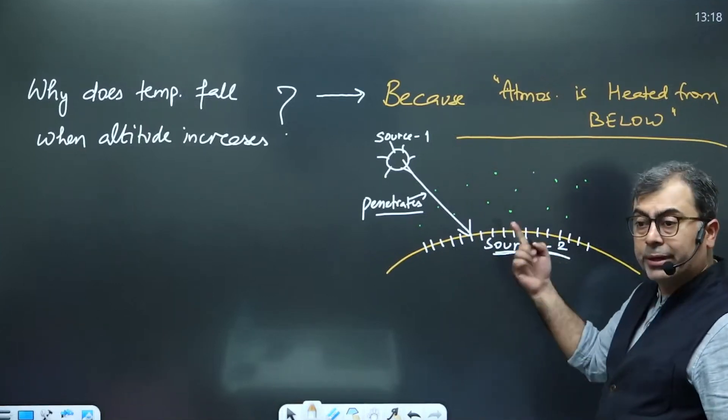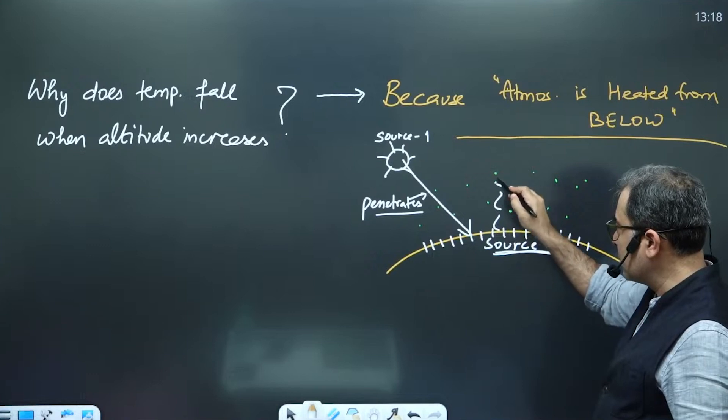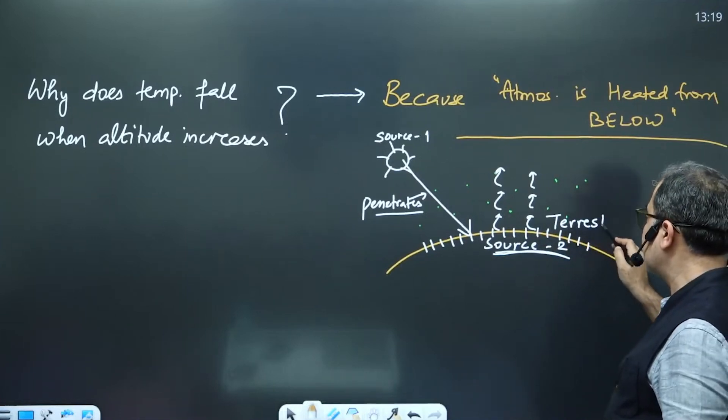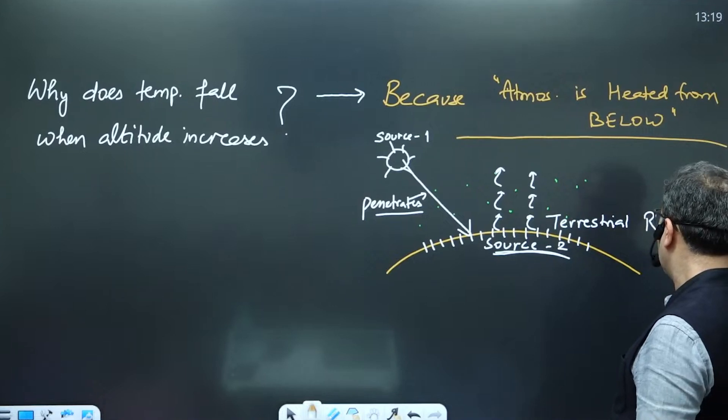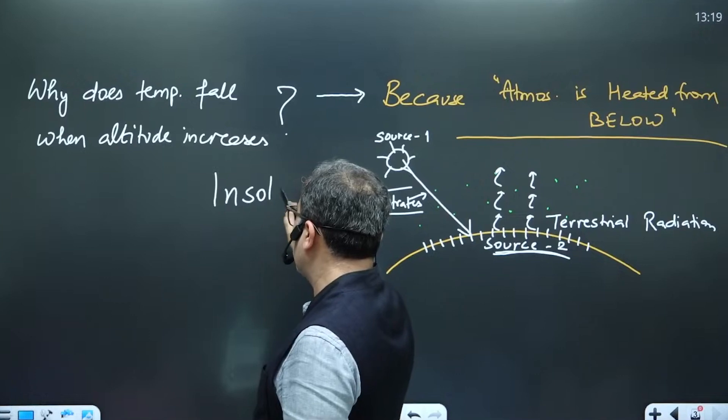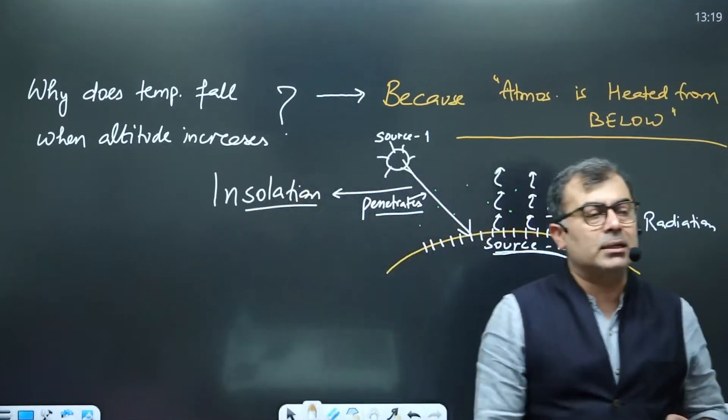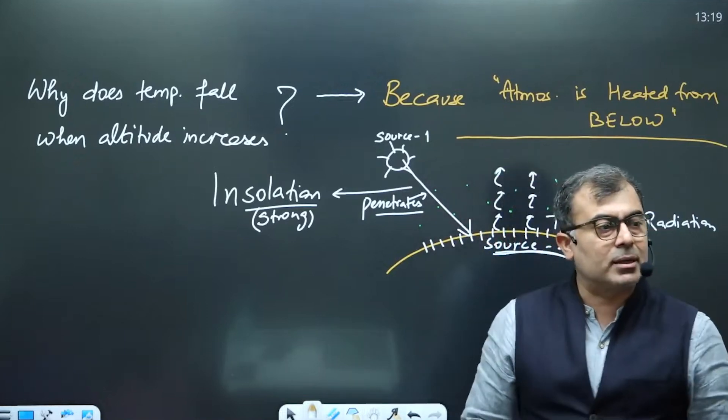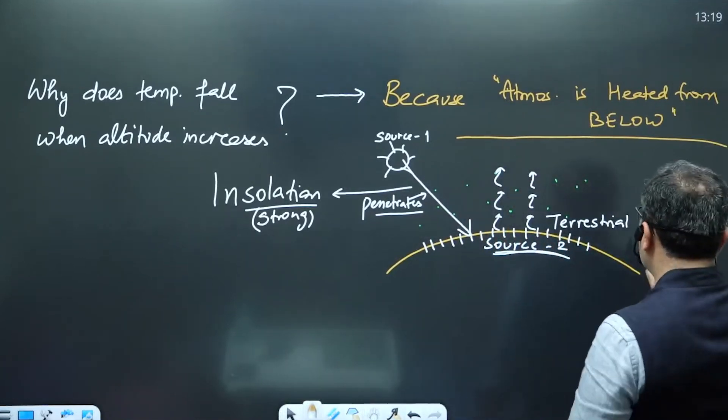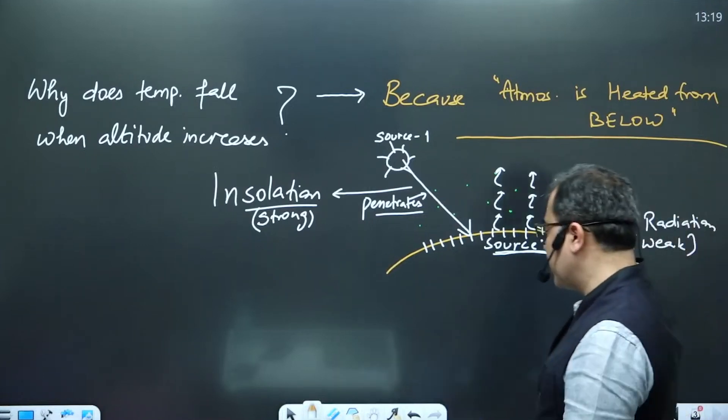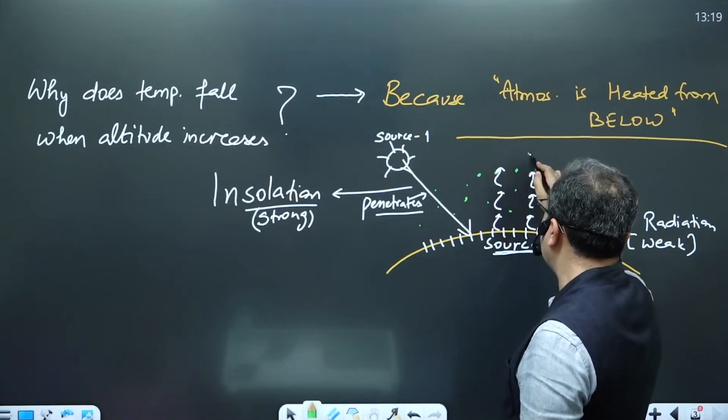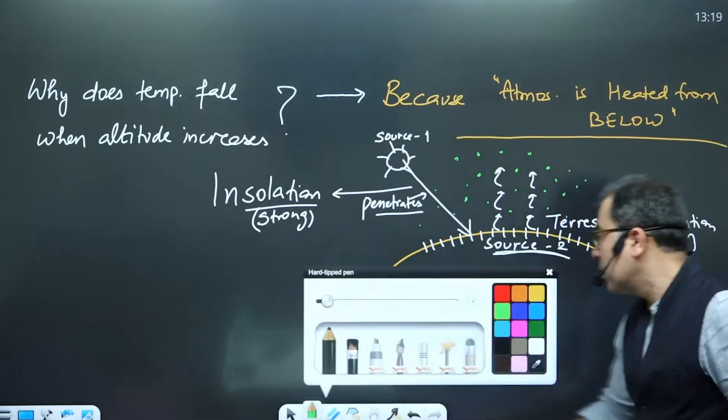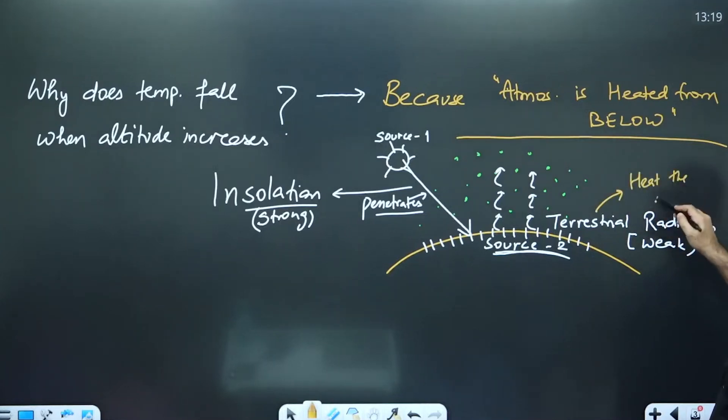And now earth is the source which is going to send out energy. So earth's energy goes like this. It is weak energy. Weak energy, earth energy is called terrestrial radiation. And sun's energy is called insolation. The energy coming from the sun is called incoming solar radiation. This is strong. It will just penetrate through the atmosphere without heating. Terrestrial radiations are weak. Atmosphere will block it and interact with it. So what is heating the atmosphere? Terrestrial radiations heat the atmosphere, not the sun's rays.